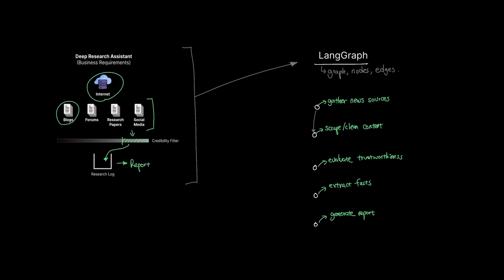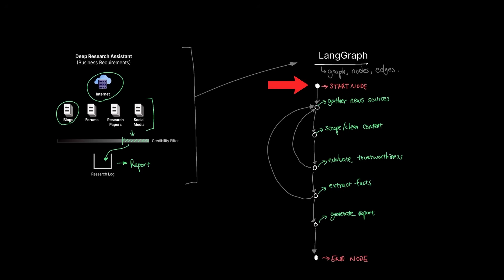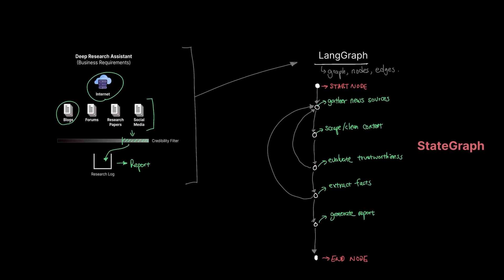Once all these nodes and edges are configured and compiled, LangGraph will orchestrate them by executing them based on how it's configured. For a deep research assistant, the graph will have a starting node that serves as the entry point, all the nodes and edges that do individual tasks, and finally an end node that terminates the workflow.